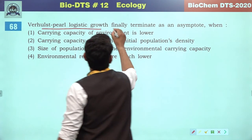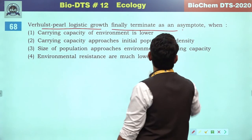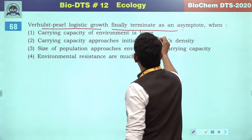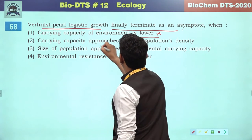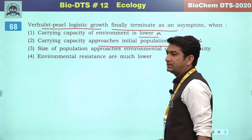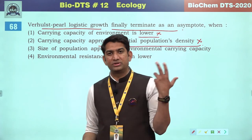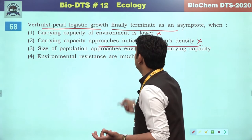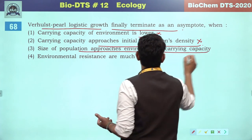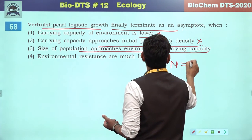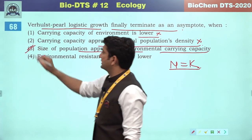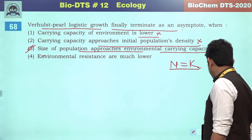Logistic growth finally terminates as an asymptote when the carrying capacity of the environment is reached. If carrying capacity approaches the initial population density — size of population approaches the environmental carrying capacity when N equals K — the asymptote is reached. So the correct reference will be the third option.